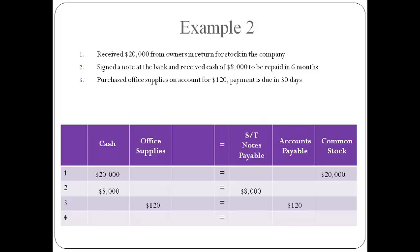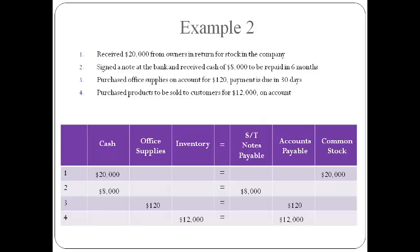Office supplies are then purchased on account. The amount goes in the office supplies column and the accounts payable column. Owing suppliers on account is recorded to accounts payable. The company then purchases product to be sold to customers. Products that will be sold to customers is inventory. Inventory increases and so does accounts payable because the inventory was not paid for.